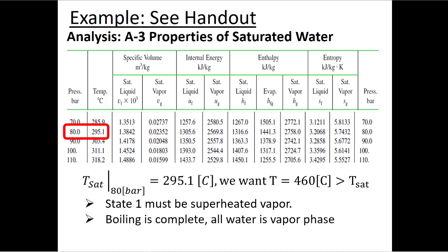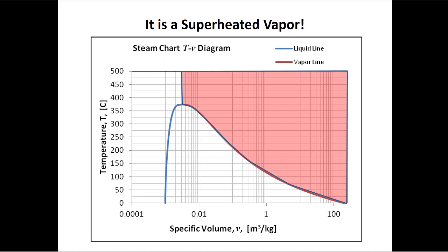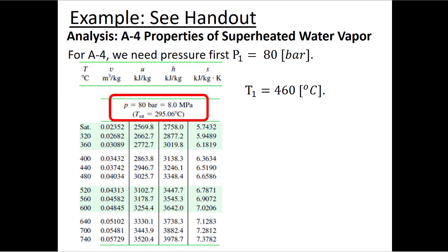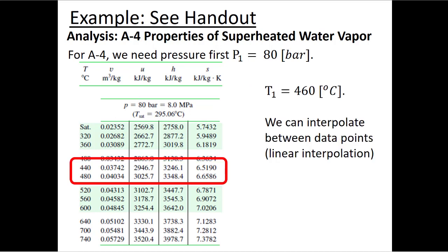Just like at one atmosphere the boiling point is 100°C — if our temperature is above that we have steam — here in this case we know we are superheated vapor, so we go to Table A4 for superheated vapors. On Table A4 I look for the subtable where the pressure is 80 bar and I hope to find a row that coincides with our temperature T1. In this case I don't, so I'll have to do some linear interpolation.